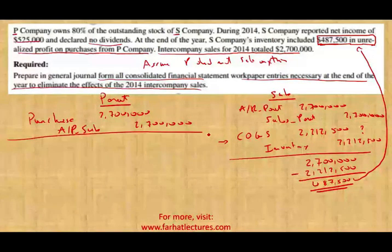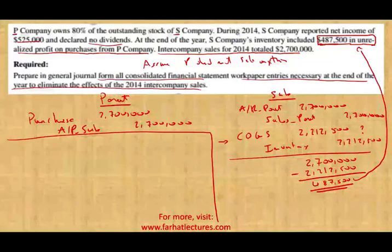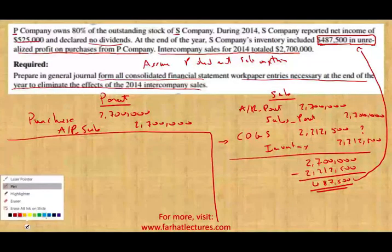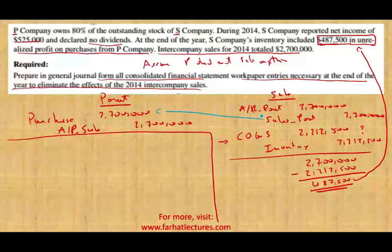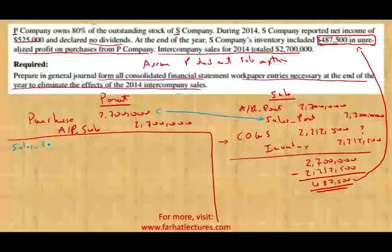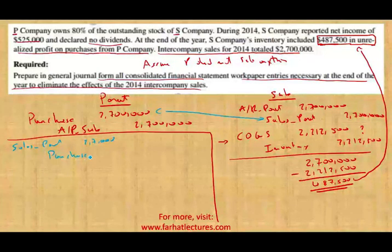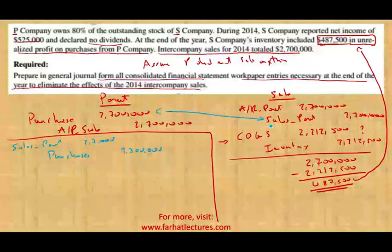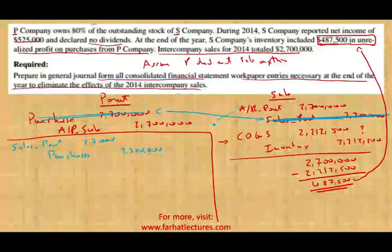Now let's see what we need to do. First, we have to eliminate the sales. Sales will be eliminated against the purchases: debit sales — parent company — 2.7 million, credit purchases — 2.7 million. What happened is the intercompany sales and intercompany purchases have been eliminated. Obviously we also close accounts payable against accounts receivable. That's not a problem.